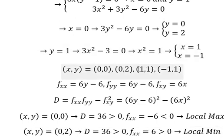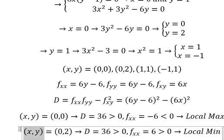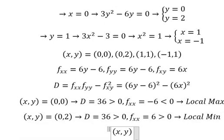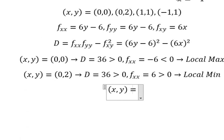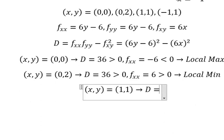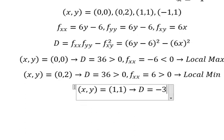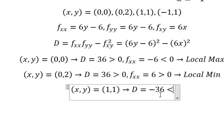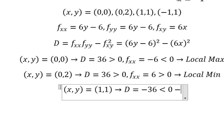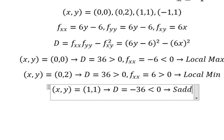Now let's go to point (1, 1). We put number 1 and number 1 into the formula. We get D equals negative 36. Since this is smaller than 0, this is about a saddle point.